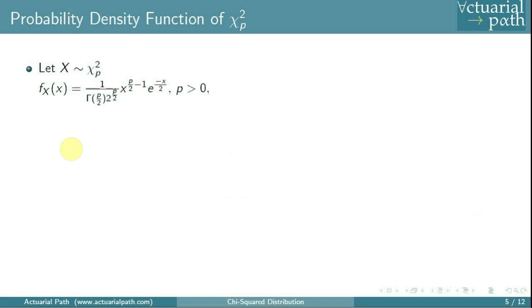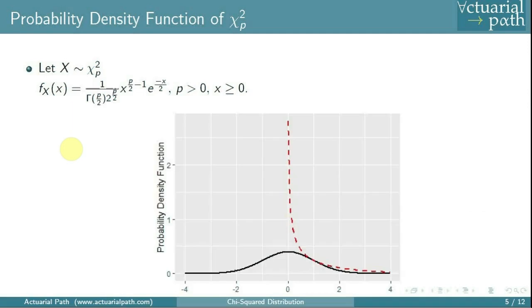The chi-squared distribution cannot take values less than 0. Looking at the plot of the chi-squared distribution with 1 degree of freedom alongside the standard normal (black solid line) and chi-squared(1) in red dotted lines: you can see that the chi-squared distribution always takes non-negative values. This makes sense because the chi-squared distribution is obtained by summing squares of standard normals, and squaring any number always gives a positive result.